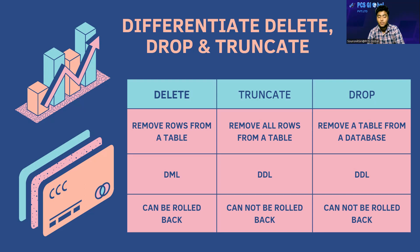DELETE is a DML command while TRUNCATE and DROP are both DDL commands. With DELETE, data can be rolled back after the operation, meaning you can retrieve deleted data. However, with TRUNCATE and DROP, the data cannot be rolled back because it is permanently deleted.